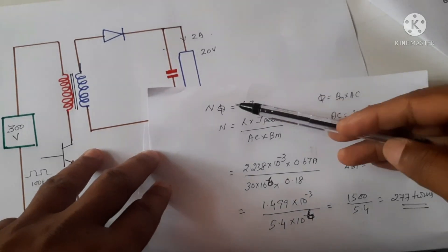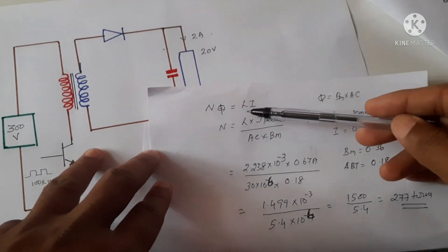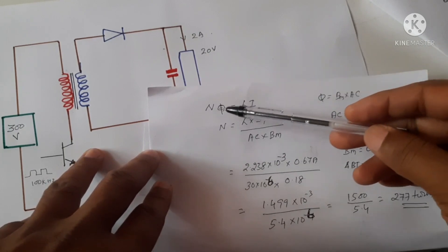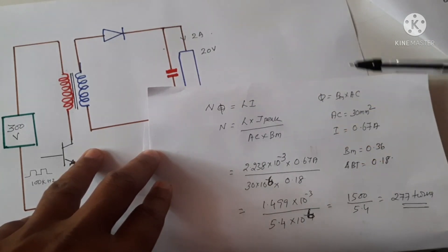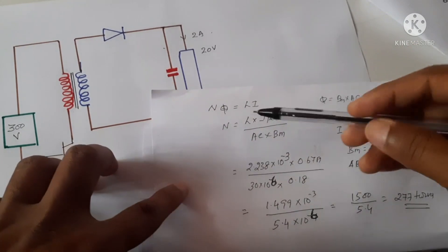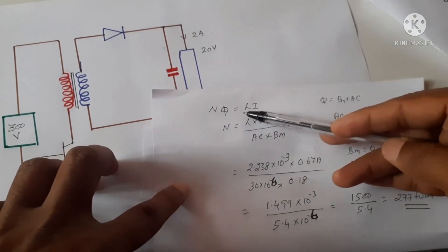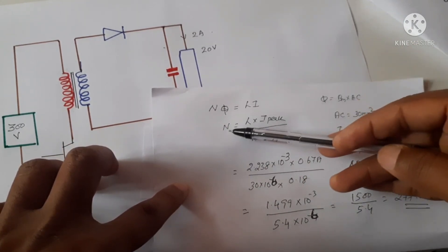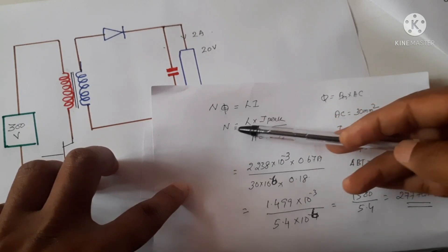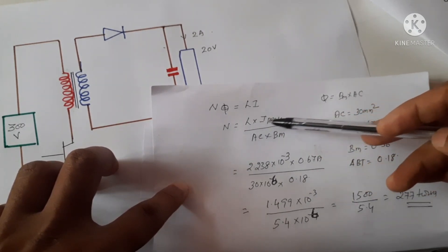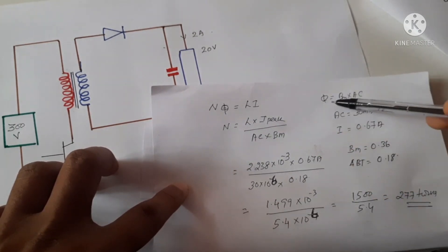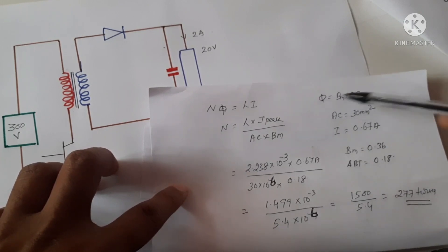Now if we know the inductance, we can calculate how many number of turns is required. We can find the value using the equation N squared equals L times I. If we substitute, N equals L into I divided by Φ, where Φ can be written as Bm into AC.